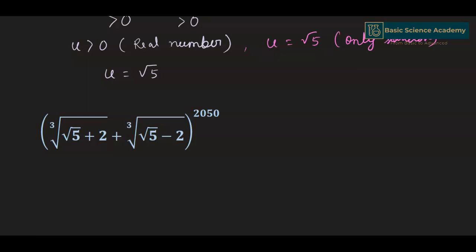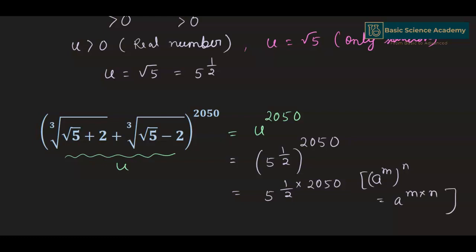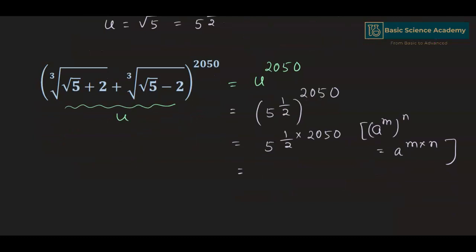We need to find u^2050. Since u = √5, we can write √5 as 5^(1/2). So u^2050 = (5^(1/2))^2050 = 5^(1/2 × 2050), using the law (a^m)^n = a^(mn). This gives 5^(2050/2) = 5^1025. Hence the answer is 5^1025.